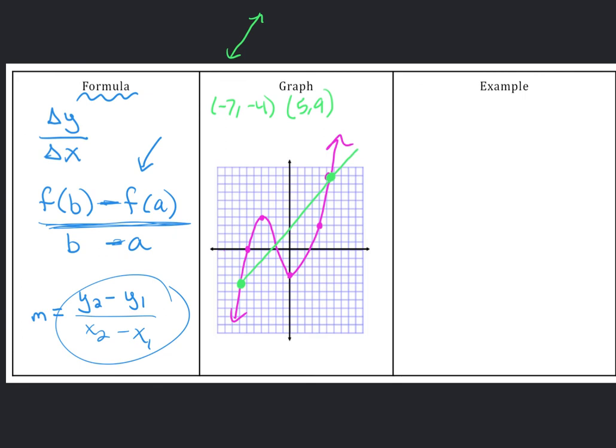I want to find the average rate of change between those two points. So if I connect them over that interval, it makes a straight line that I could find the average rate of change for. When you do this, this line is called a secant line.